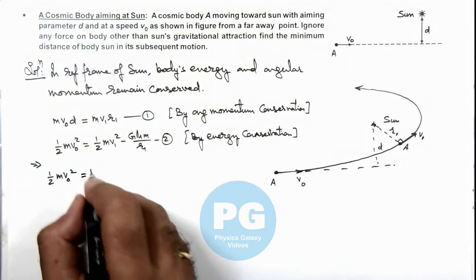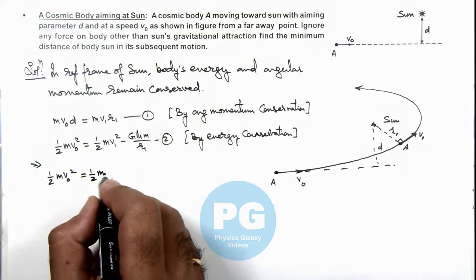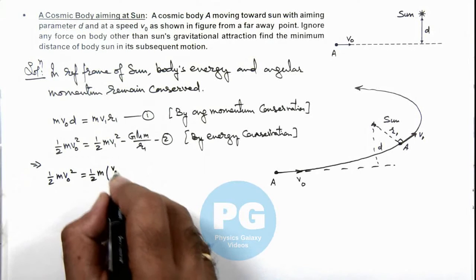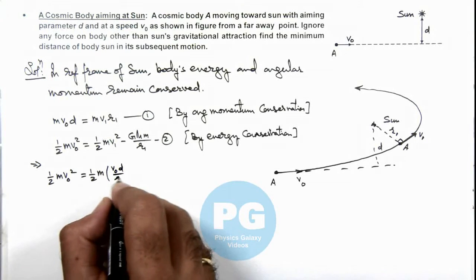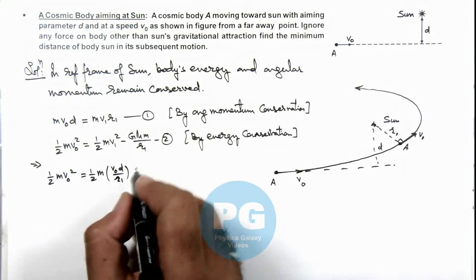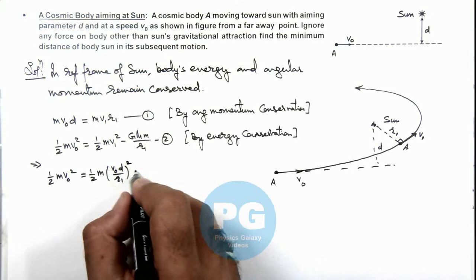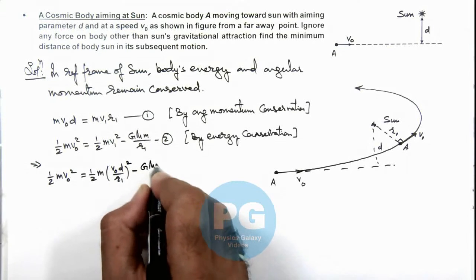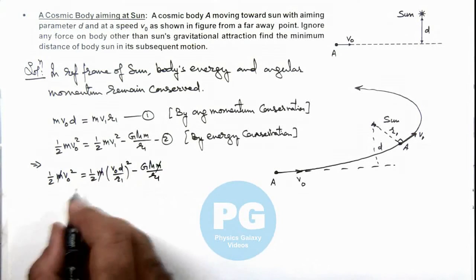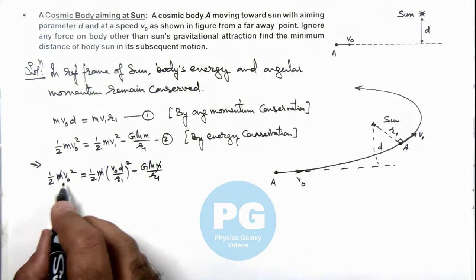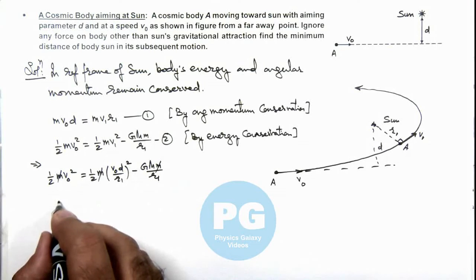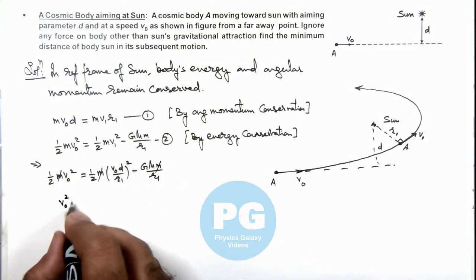Is equal to half m, value of v1 we can write as v not d by r1, and in this situation this whole square minus G m M by r1. Here mass of body can also be cancel, and finally we are getting in this equation as a quadratic equation which can be written as v not square d square r1 square.